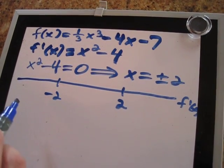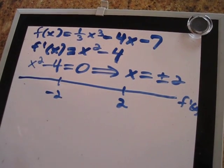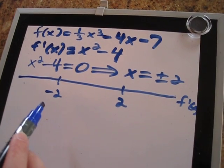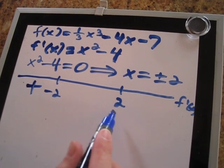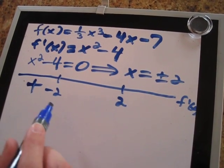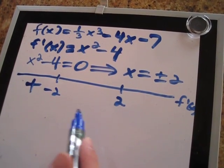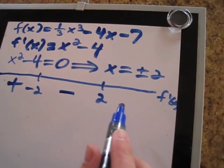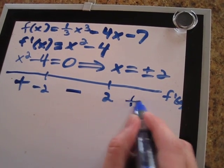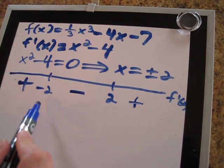So first let's do this interval. If we plug in a very large negative number, less than negative 2, f prime of x will be positive. On this interval, if we plug in a value between negative 2 and 2, f prime of x is negative. And on this interval, if we plug in a very large number, f prime of x will be positive.